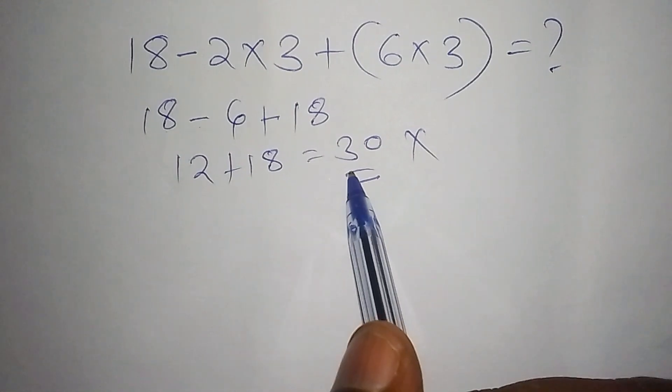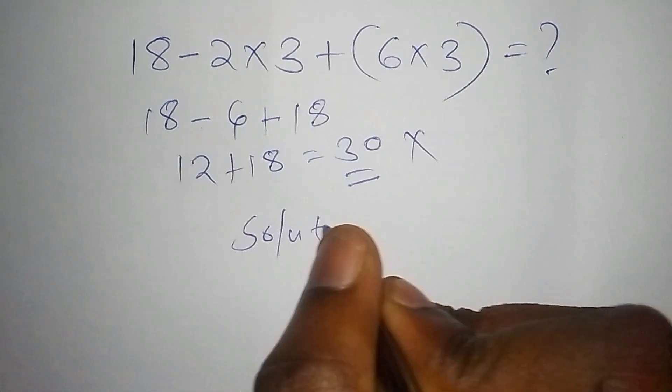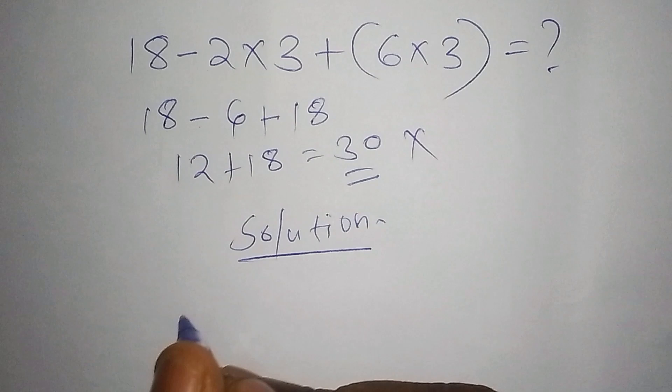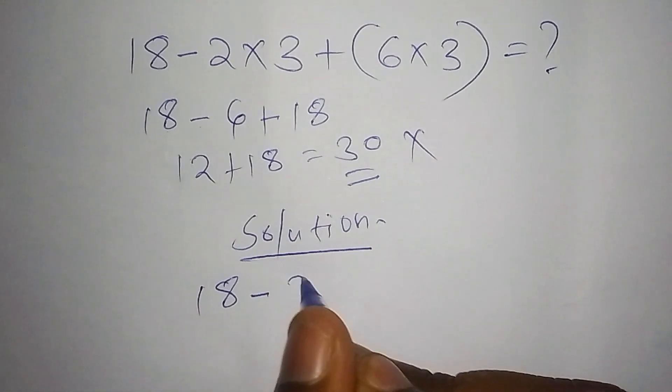So let's begin. Here we shall start with the solution to this problem. We have 18 subtract 2 multiply by 3, add, in brackets, 6 multiply by 3.